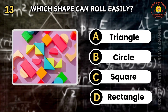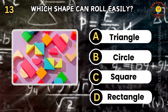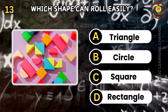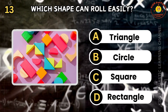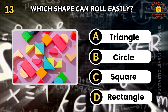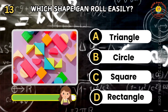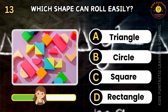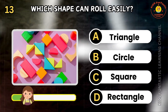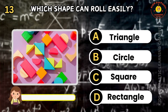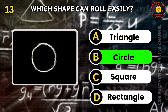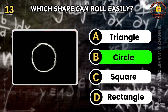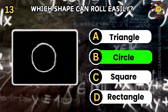Question 13. Which shape can roll easily? A: triangle, B: circle, C: square, D: rectangle. You've got it! The correct answer is B. A circle can roll because it has no corners.